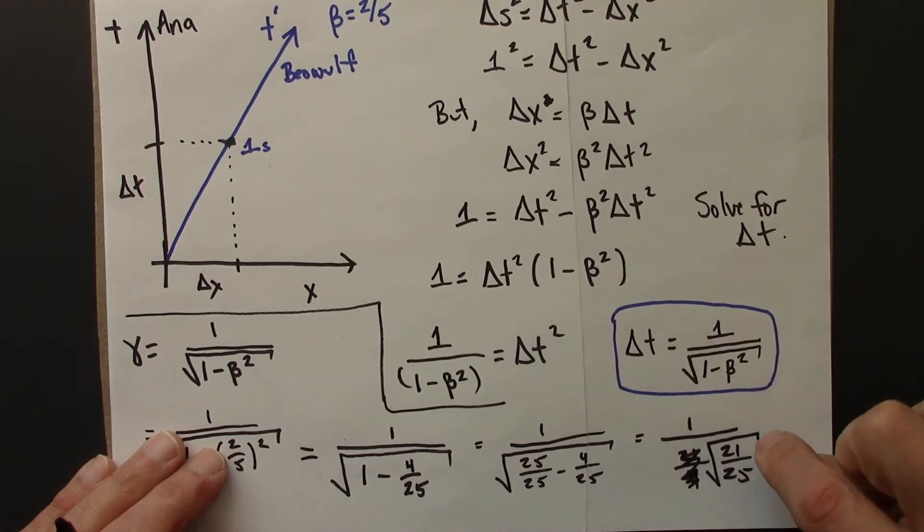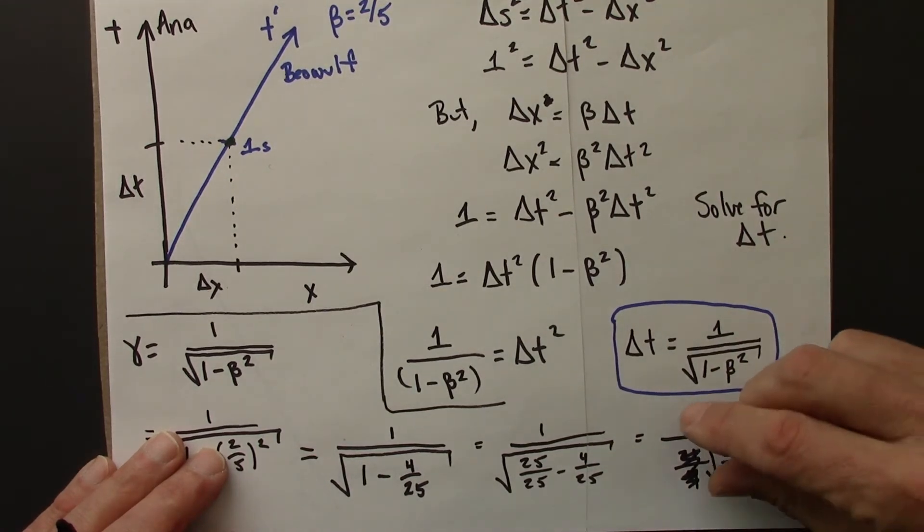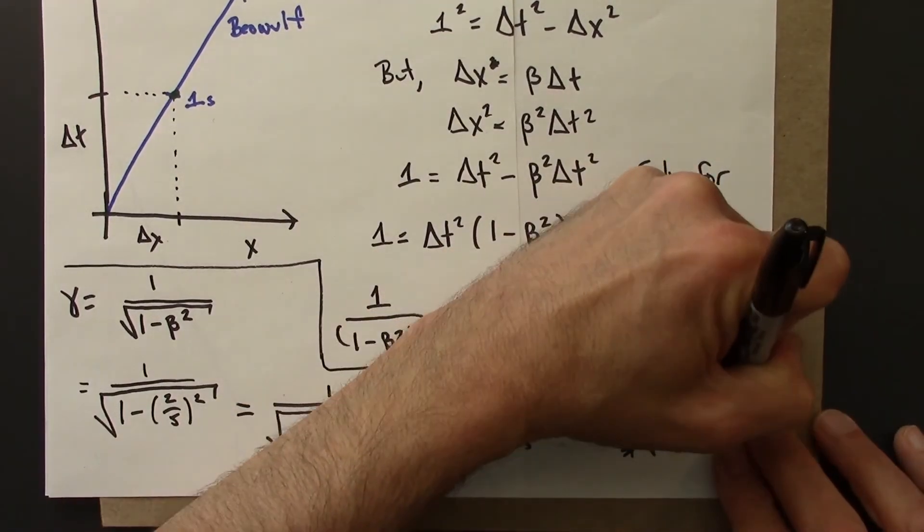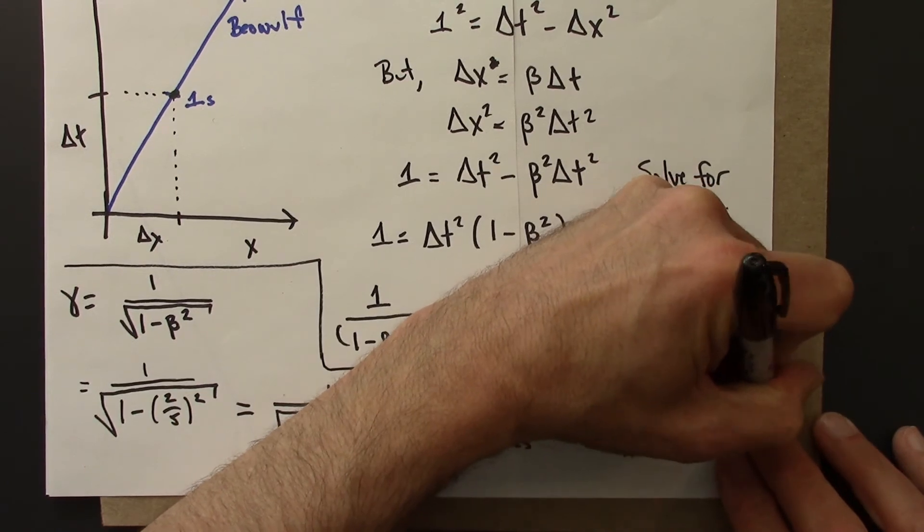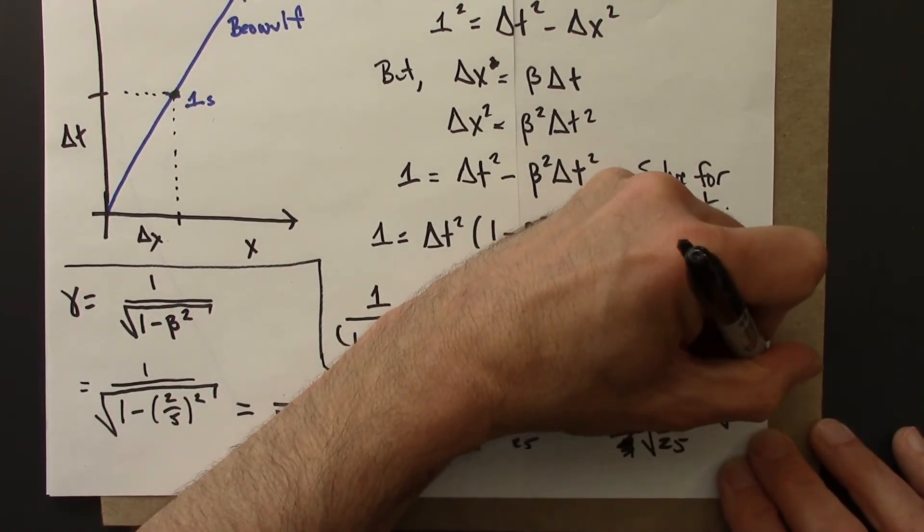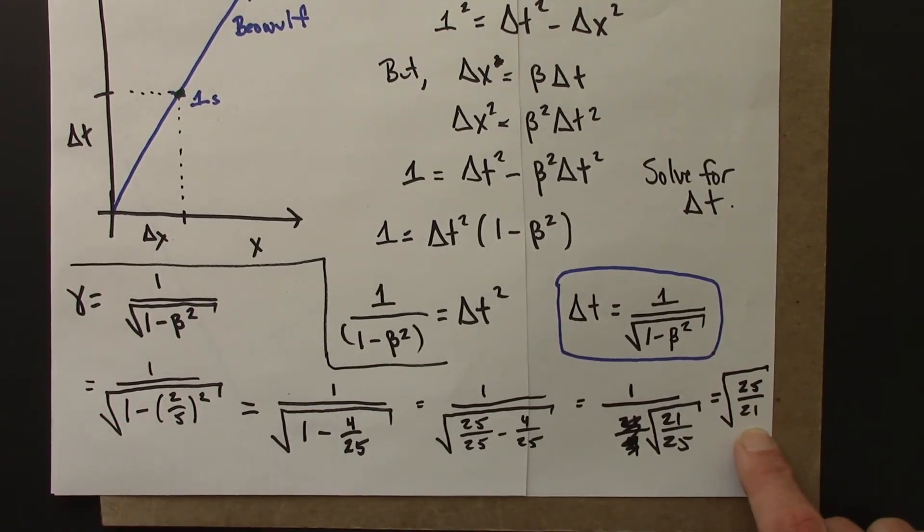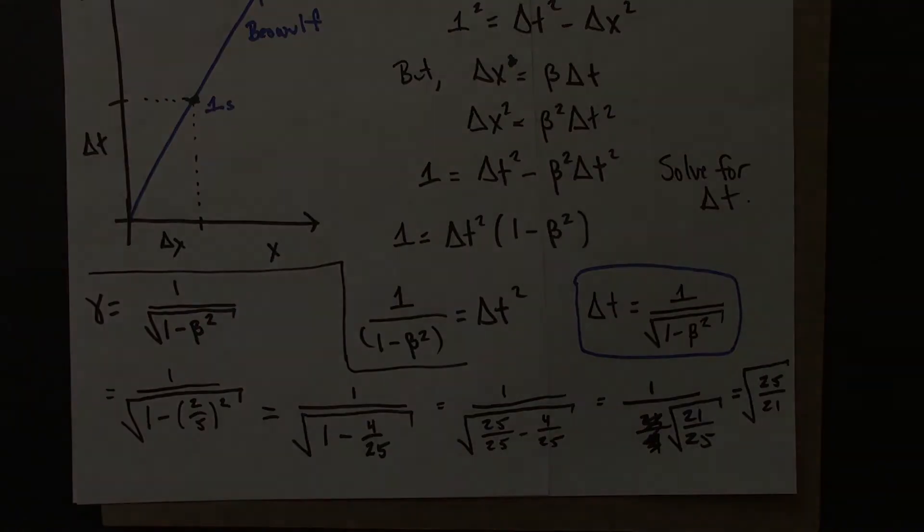And then 1 over something downstairs is the same as... Let me just write it rather than trying to say it. This is the same as 25 over 21. 25 over 21 is a number larger than 1, a bigger number on top. Square root is still going to be a number larger than 1. So 25 divided by 21, and then square root, I get about 1.09. So for this, I get gamma is about 1.09.